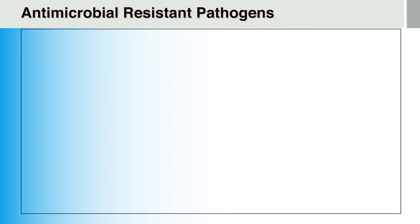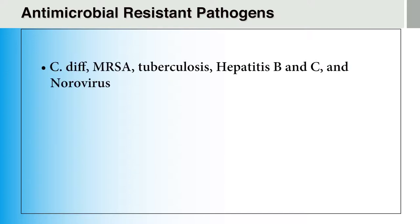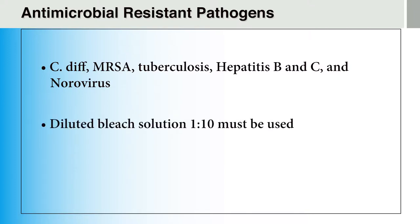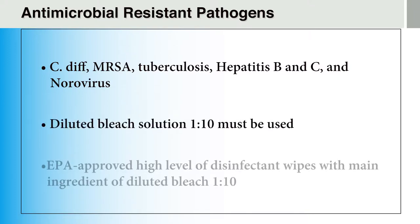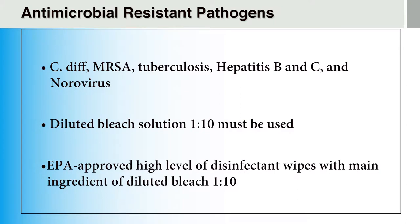Remember, routine cleaning and disinfection may not be adequate to remove some pathogens that are highly contagious and resistant to antimicrobial products, such as C. diff, MRSA, tuberculosis, hepatitis B and C, and norovirus. In this case, you must use a diluted 1:10 bleach solution or EPA-approved high-level disinfectant wipes. Note, if a spray bottle is used to spray the diluted bleach solution, you must wear an N95 mask and eye protection in addition to gloves and a fluid-resistant gown.